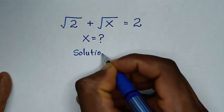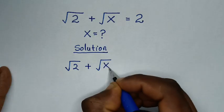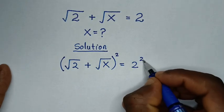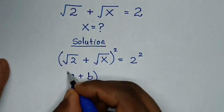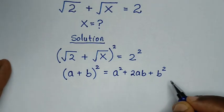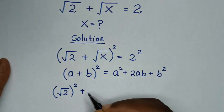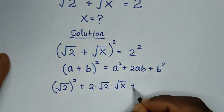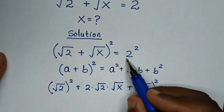Solution. Our problem is: square root of 2 plus square root of x is equal to 2. In the first step, we'll square both sides. The left side is in the form of (a + b)², which equals a² + 2ab + b². Applying this, a² is (√2)², 2ab is 2 times √2 times √x, and b² is (√x)², which equals 2² = 4 on the right side.